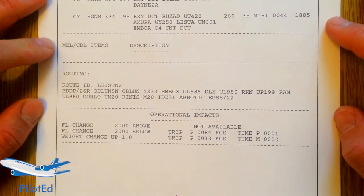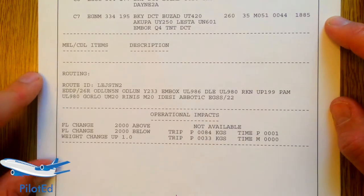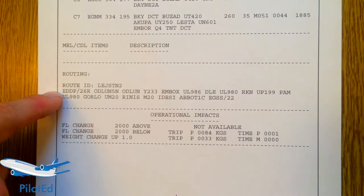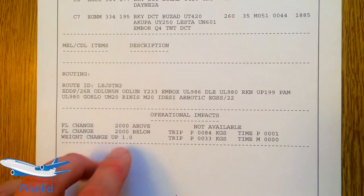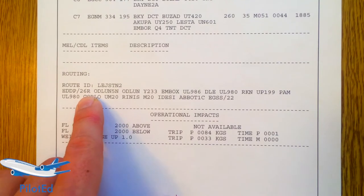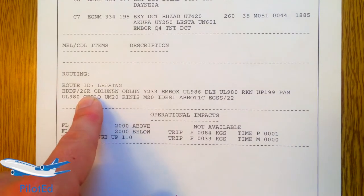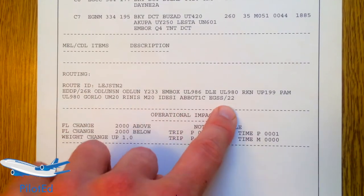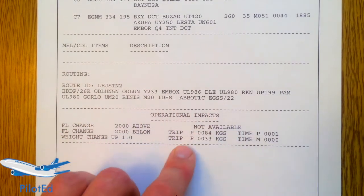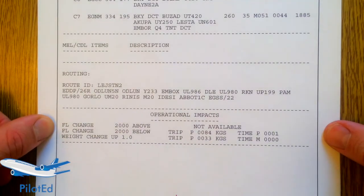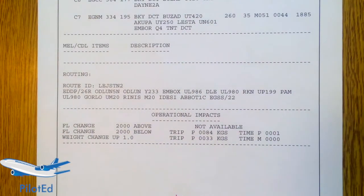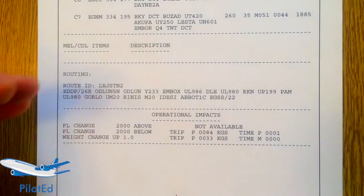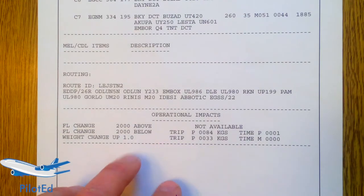Following down, any MEL items on the aircraft are shown — in this case none. Then there's the routing page, which I use to program the FMC. You can see the expected departure runway, the SID, the route, and arrival into runway 22 at Stansted.